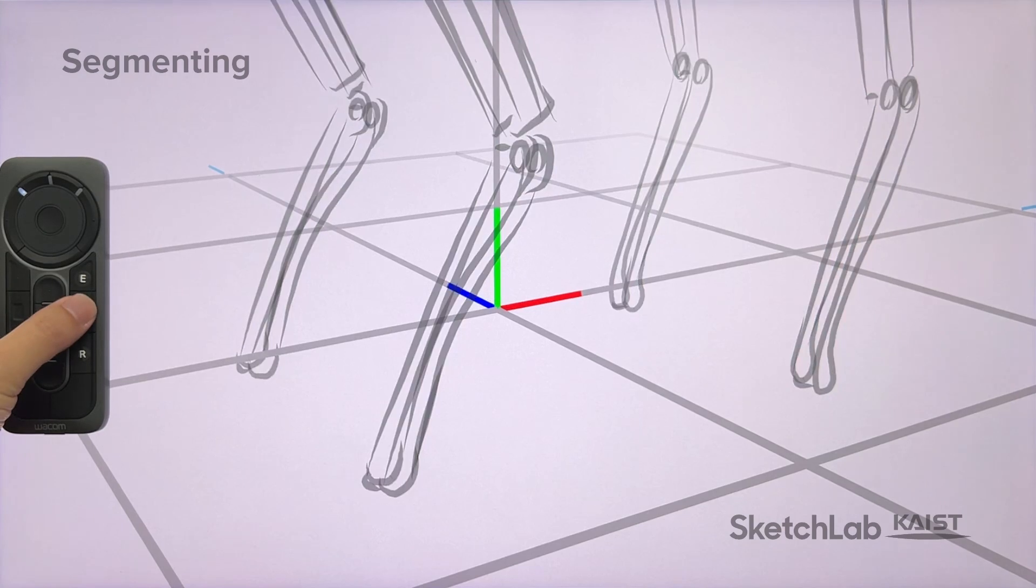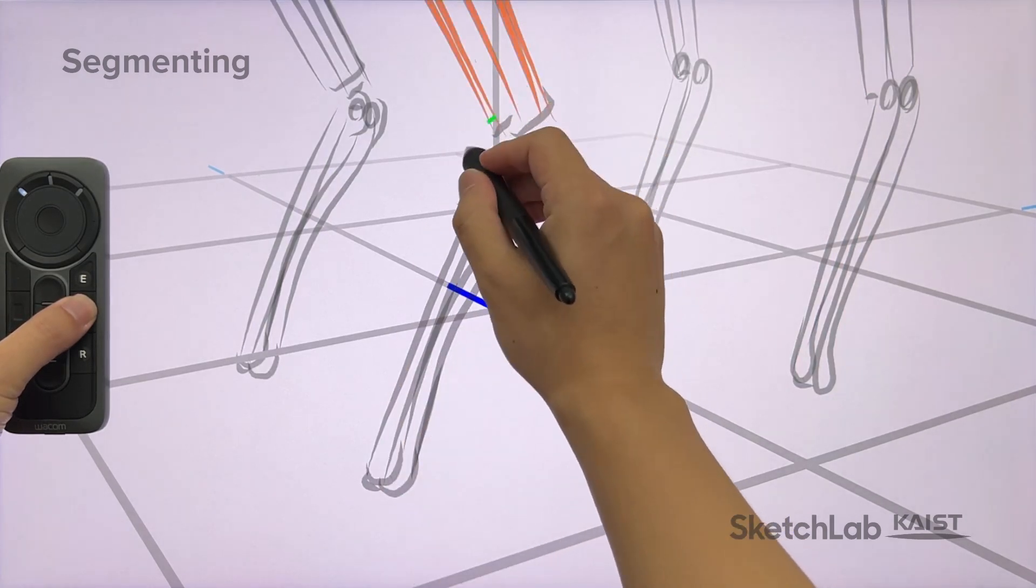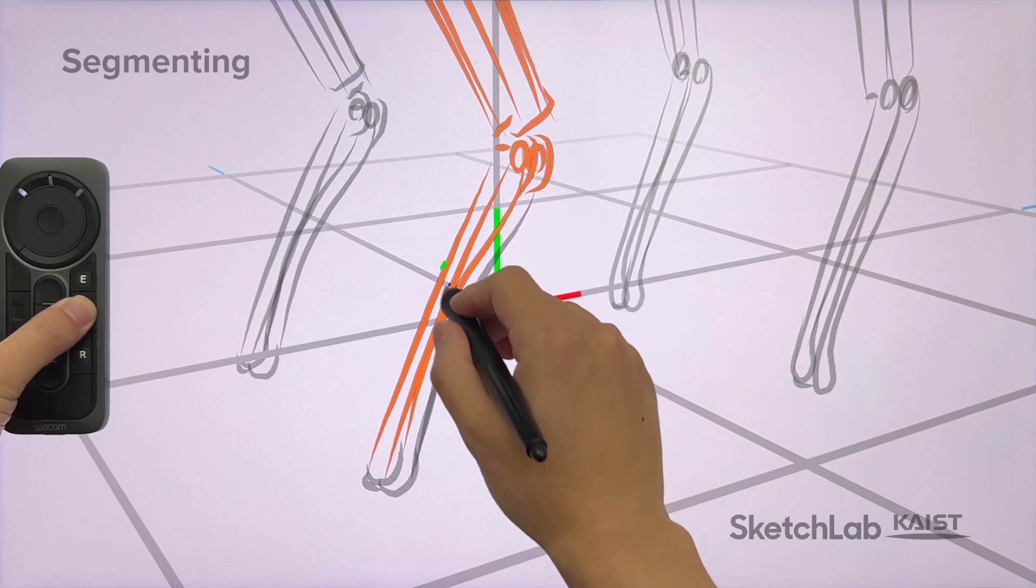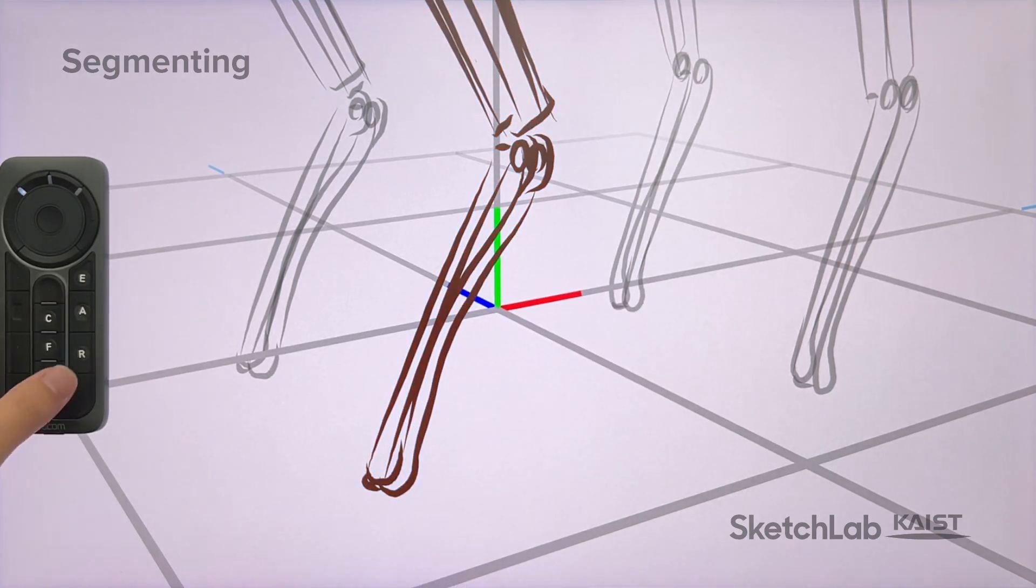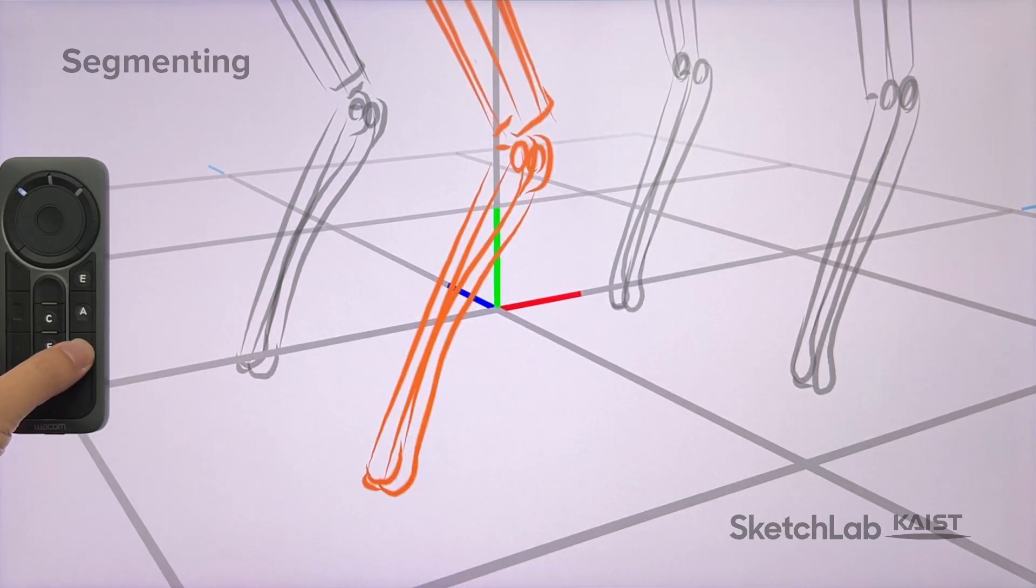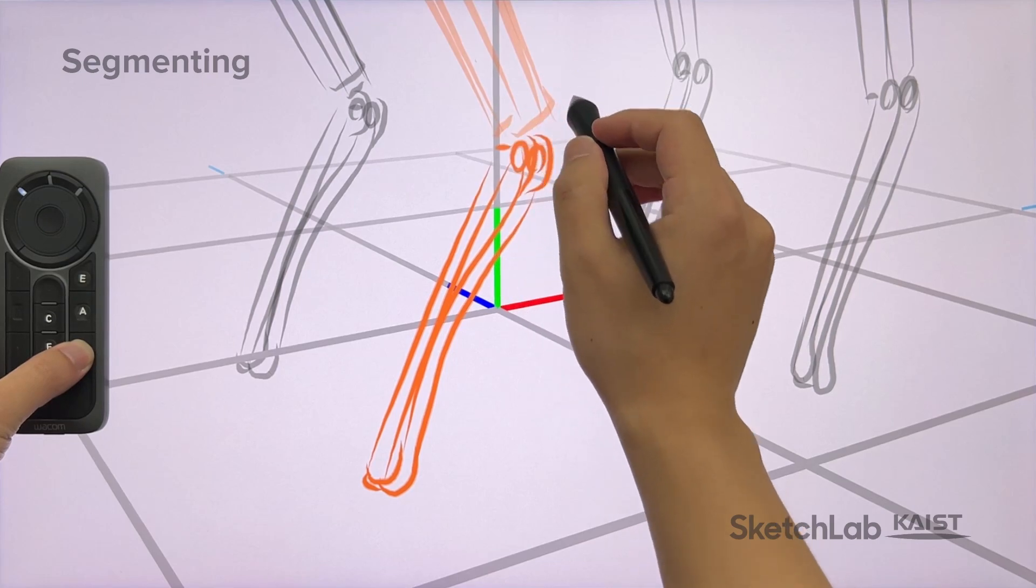While holding down the add to part button with the left hand, with the right hand, the designer can segment sketch curves into a separate part. And while holding down the remove from part button, the designer can remove unnecessary curves from a part.